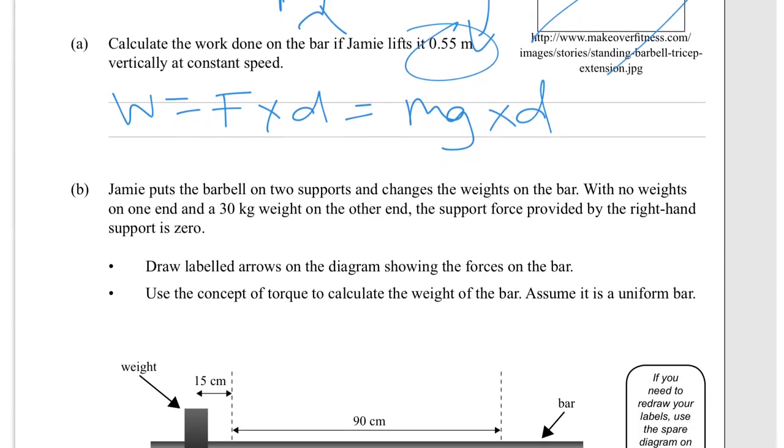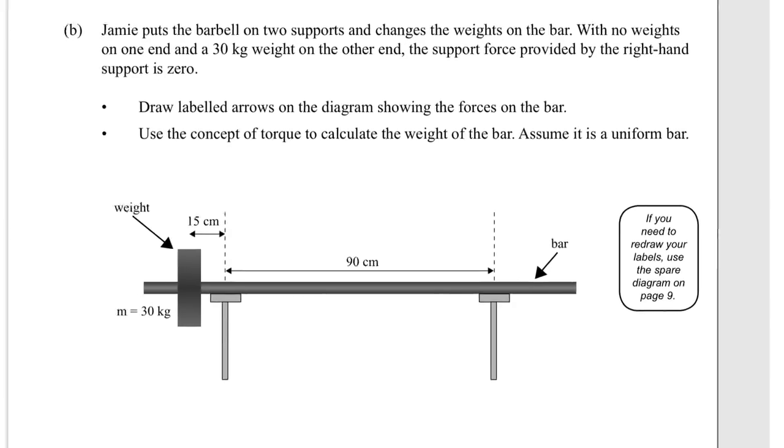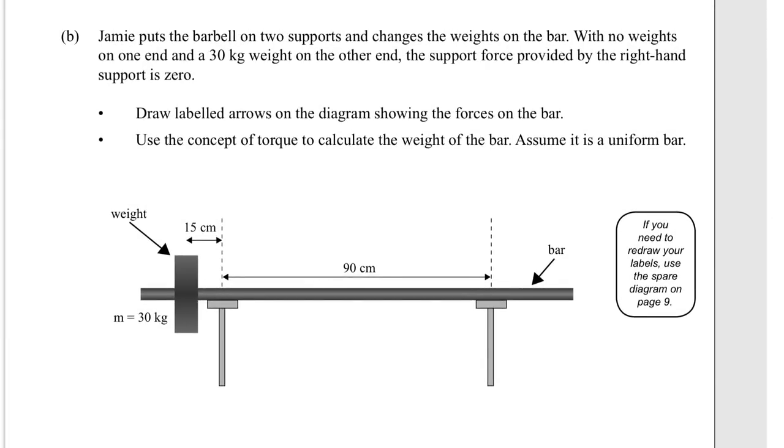Part b: Jamie puts the barbell on two supports and changes the weights on the bar. With no weights on one end and a 30 kg weight on the other end, the support force provided by the right hand support is zero. There is zero support force here if s equals zero at that point.